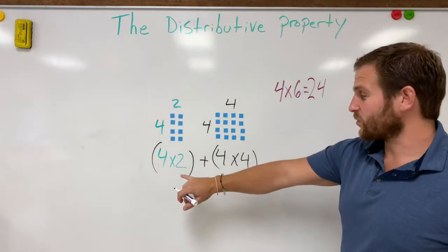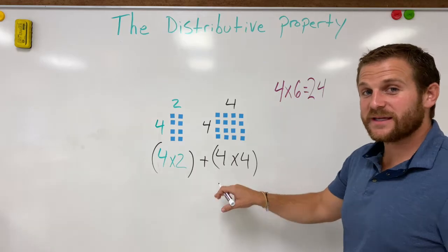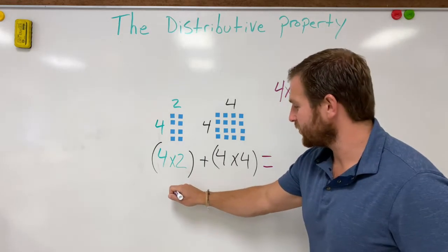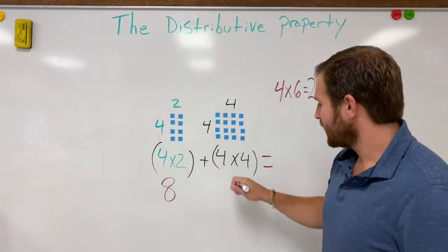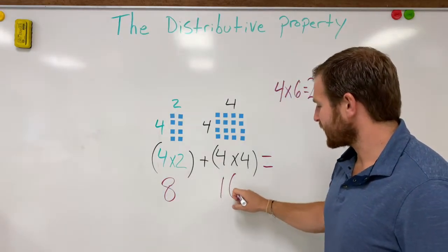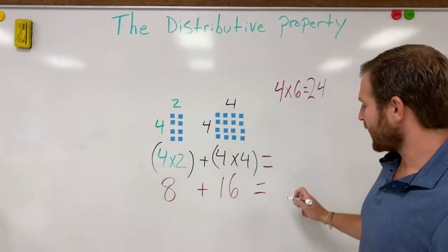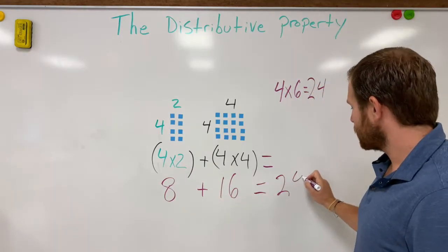Now what we're going to do is we're going to multiply each of these separately and then add them together and see what answer we get. So four times two is going to give us eight and four times four is going to give us 16. Add eight plus 16 and we get 24.